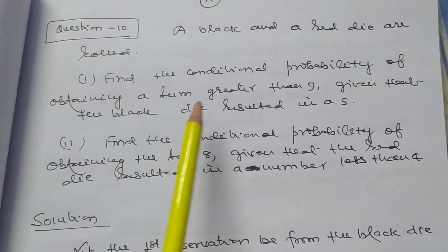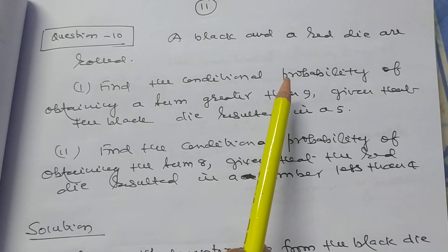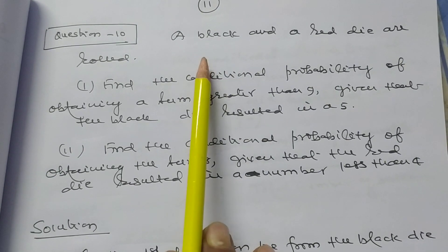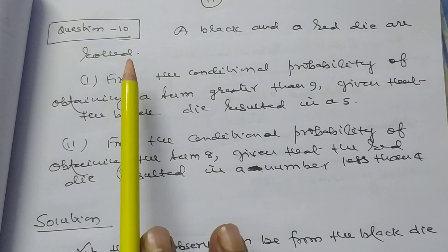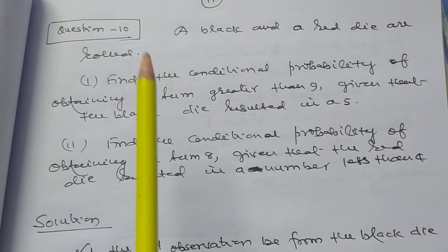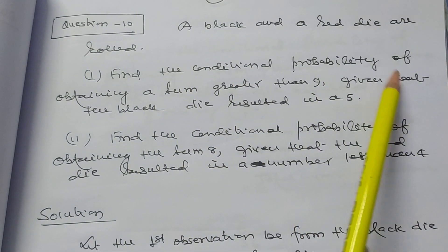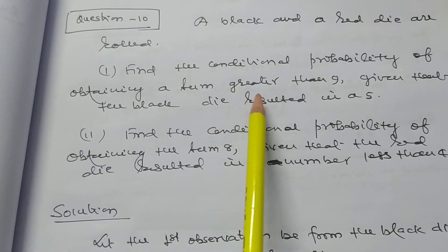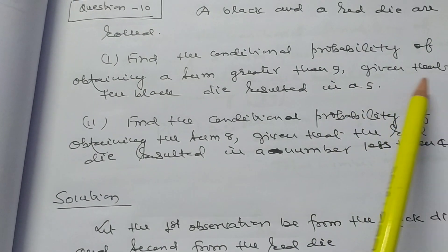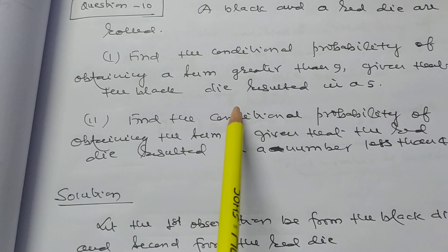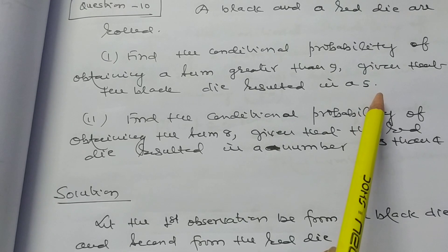I want to discuss some more problems on conditional probability. A black and a red die are rolled. Find the conditional probability of obtaining a sum greater than 9, given that the black die resulted in a 5.